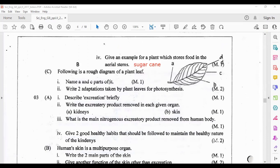C part: following is a rough diagram of a plant. Name A and C parts. Here A part is the petiole or the leaf stalk. C part is the leaf margin. Write two adaptations taken by plant leaves for photosynthesis. Write the two adaptations: flat and thin leaves, another one is broad area to absorb sunlight properly.